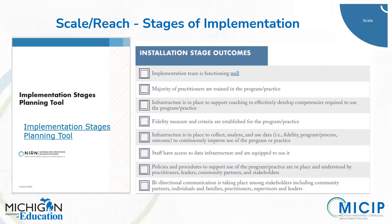Coming back to the Implementation Stages Planning Tool — and the reason it's included here as part of scale and reach is because it talks about the stages again. The second component of scale and reach is whether we're in the right stage implementing the right activities. This tool can be used not only for planning but for monitoring as well. Go back and say: we said we are in the installation stage — the installation stage says we should be doing these things. Are we indeed actually doing those? If not, might we need to move back to an earlier stage? Or if we're doing all these things, might we be ready to move to the next stage?